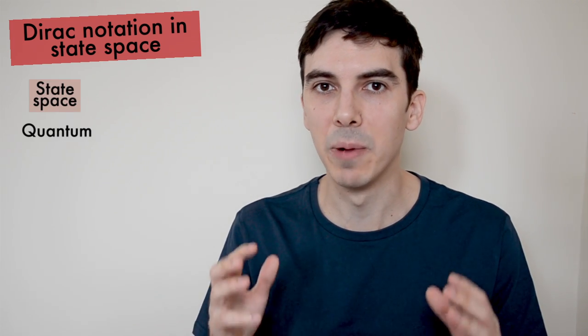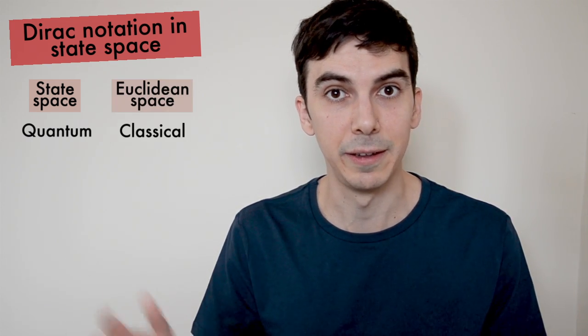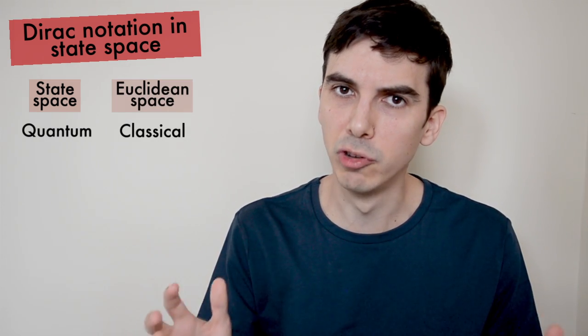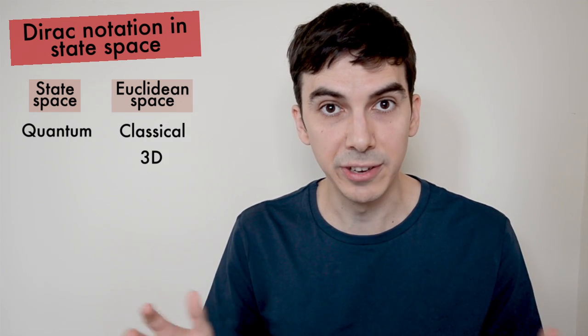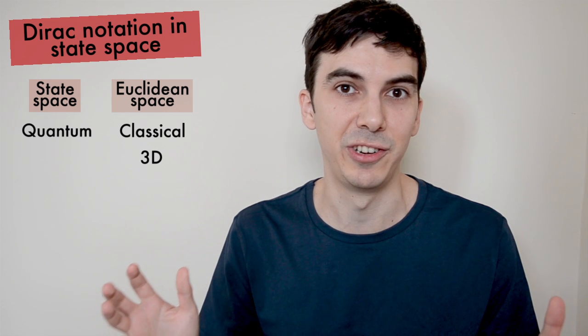Hi everyone, this is Professor M. Das Science and today I want to talk about Dirac notation in state space. This is another video in our series of rigorous quantum mechanics. State space is the name that we give to the vector space in which quantum systems live, just like Euclidean space is the name we give to the vector space in which we describe classical physics. State space is a bit different to the usual Euclidean space — rather than having three dimensions, it can have more dimensions, in fact it can have infinite dimensions.